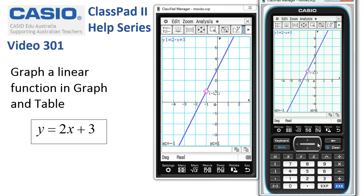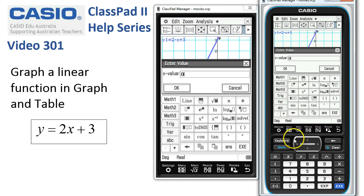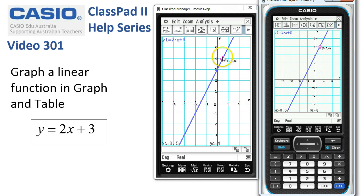If you want to go to a particular coordinate, say we wanted to go to here where x is 0.5, when we're in trace mode, we simply start typing 0. A little box pops up. We can complete it. 0.5 and tap OK. And it's jumped to there.